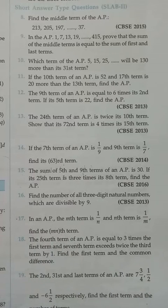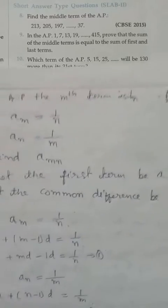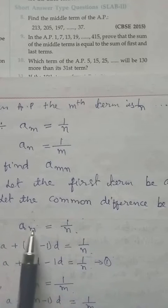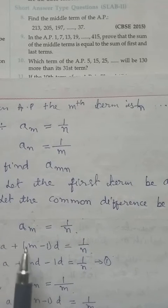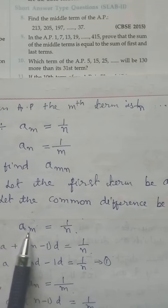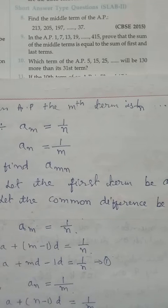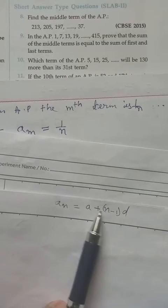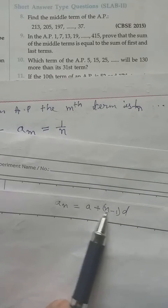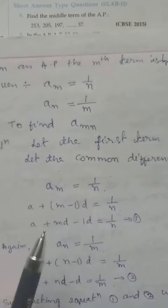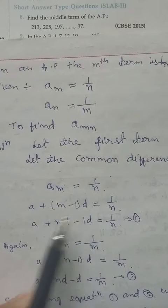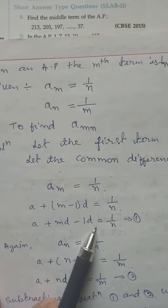Let the first term be a and common difference be d. Using what is given, am = 1/n. We apply the general term formula: a_n = a + (n−1)d, but in place of n we put m. So a + (m−1)d = 1/n. We leave this as equation 1.